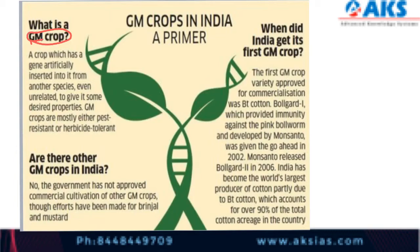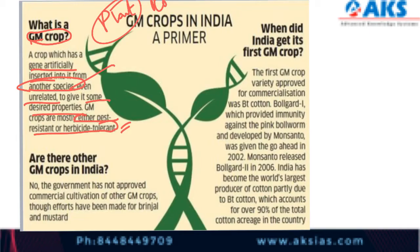A genetically modified crop is a crop which has a gene artificially inserted into it from another species — even one unrelated to it — giving it some desired properties. GM crops are mostly either pest resistant or herbicide tolerant. For example, in Bt cotton, we are using a bacterium called Bacillus thuringiensis in a cotton plant — two completely different species altogether.